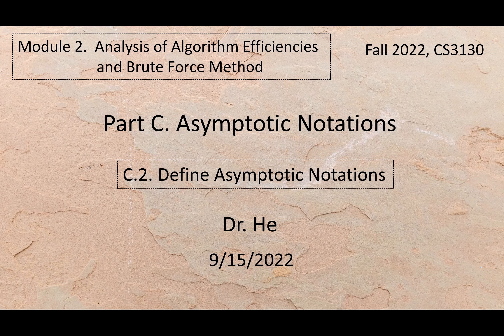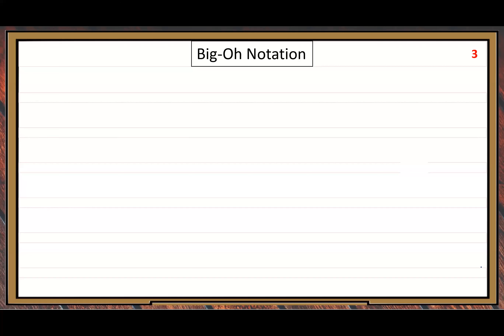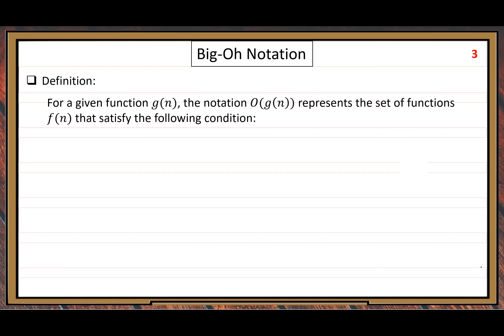Part C point two: define asymptotic notations. This time I need to give you rigorous definitions. We will learn another three notations in C point two. The first is Big O notation — different from the first three we learned in C point one. Let's look at the definition carefully.